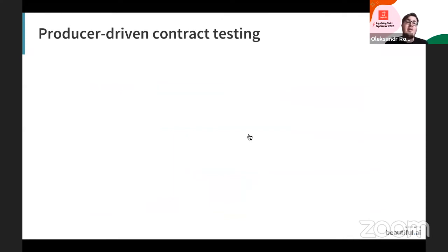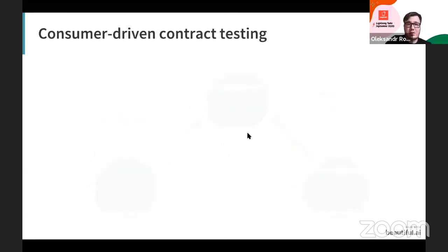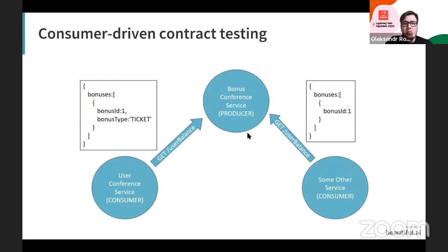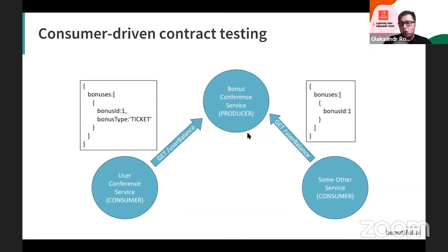In contract testing, we have two approaches. The first is producer-driven, where the producer service defines all the contracts and consumers implement this API. The alternative is consumer-driven contract testing, where each consumer that calls the producer defines its own contract. The main advantage is that for the same endpoint — like the user balance endpoint — each consumer defines its own expectations. So if the bonus service changes the bonus type field, communication will break only with the user service, not with other consumers.